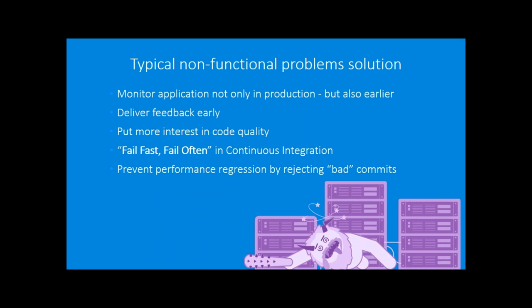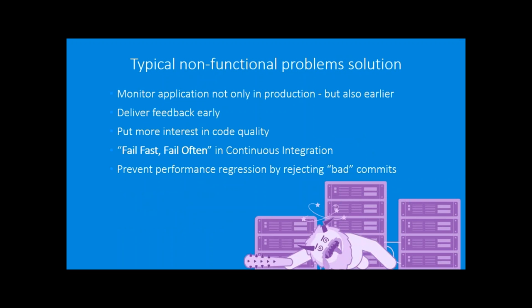We can fix this by monitoring the application not only in production but also in pre-production during build, test, and deployment. It's really super important to deliver feedback early back to developers from the pipeline. If you commit something wrong — like breaking the search bar — and you get feedback after 10-15 minutes, it's really easy to fix. If you know about it a week or two later when it pops out in production, it's really complicated and the blame war begins.